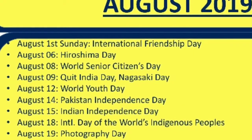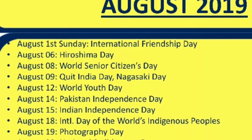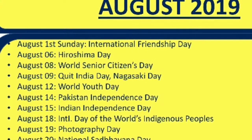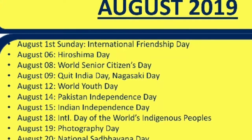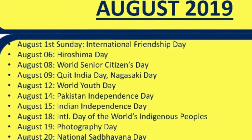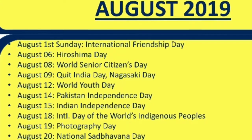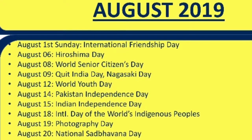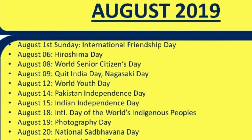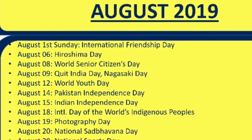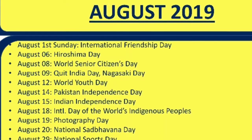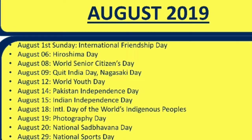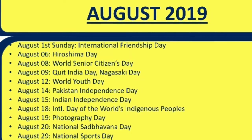In August: 1st August Sunday: International Friendship Day. 6th August: Hiroshima Day. 8th August: World Senior Citizens Day. 9th August: Quit India Day. 12th August: World Youth Day. 14th August: Pakistan Independence Day. 15th August: Indian Independence Day — this is important.